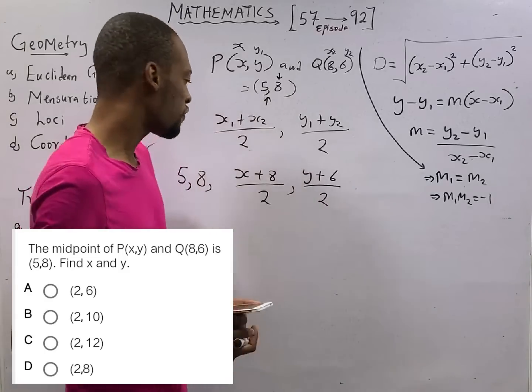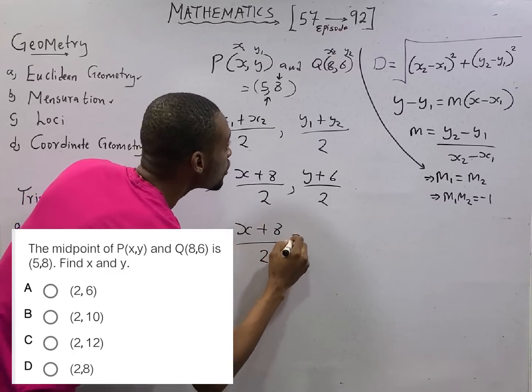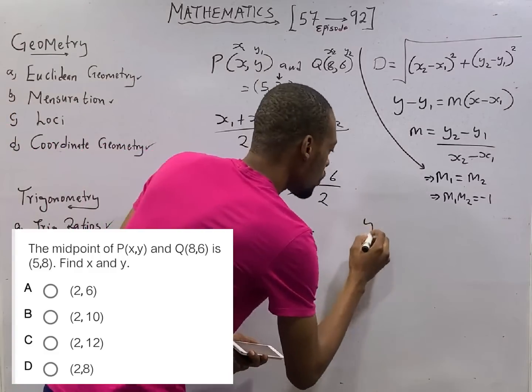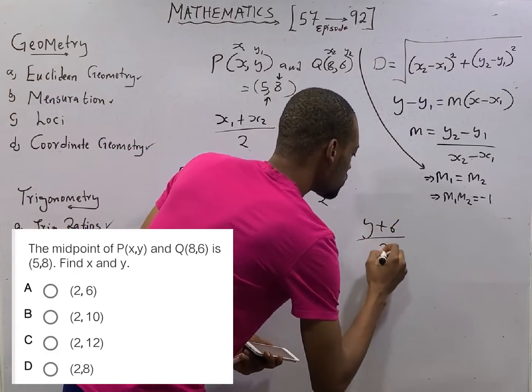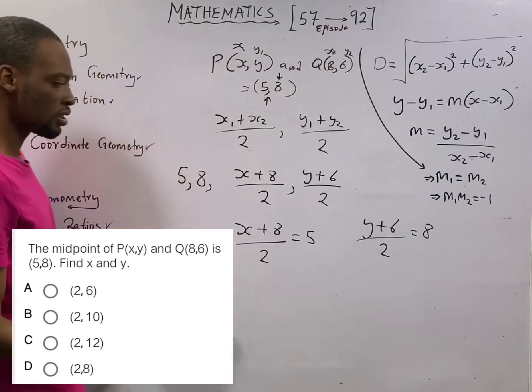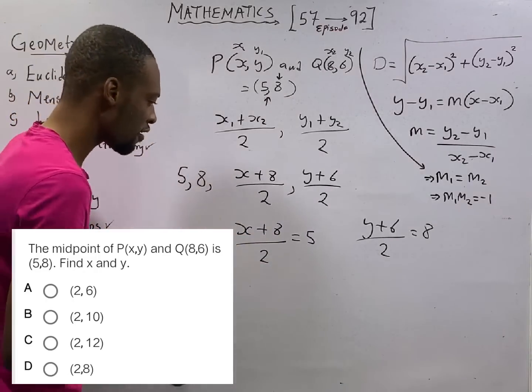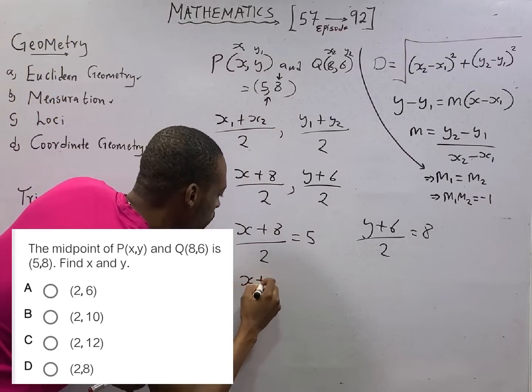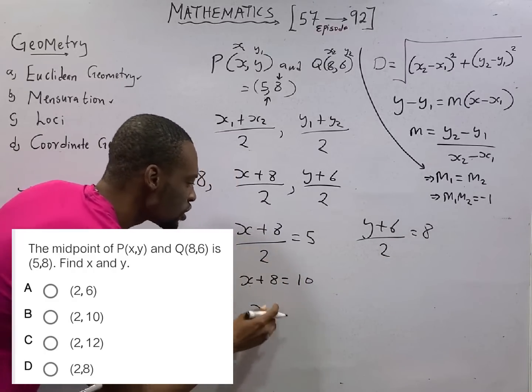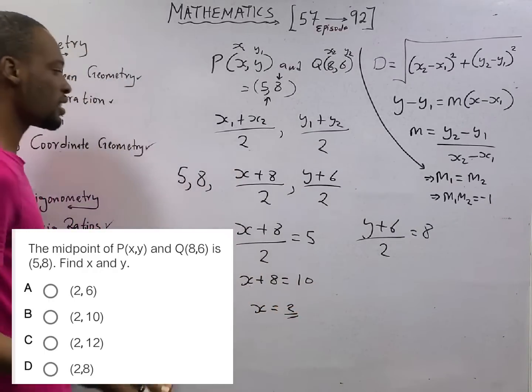So you therefore say that x plus 8 over 2 equals 5. For the y side, you say that y plus 6 over 2 equals 8. This is the midpoint and these are the coordinates. For this part, you simply have x plus 8 equals 10. Cross multiplying, x equals 10 minus 8. That is 2. So x equals 2.